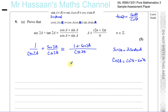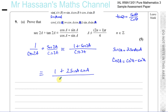Now I can change these into single angles. The numerator becomes 1 plus 2sinA cosA, and the denominator becomes cos²A minus sin²A. We're getting a bit closer, except the numerator doesn't yet have squared terms, while the denominator does.